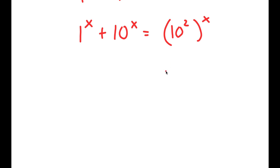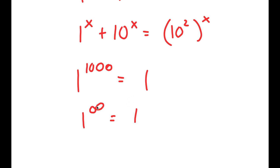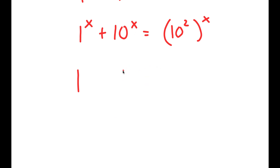From here, I'm going to look at the term 1 to the power of x. If we have 1 to the power of any number like 1000, this is still equal to 1. And even if we have 1 to the power of infinity, this is still equal to 1. So no matter what value x could be, 1 to the power of x will still be equal to 1, meaning we can just ignore the x and say this is 1 plus 10 to the power of x is equal to 10 squared to the power of x.